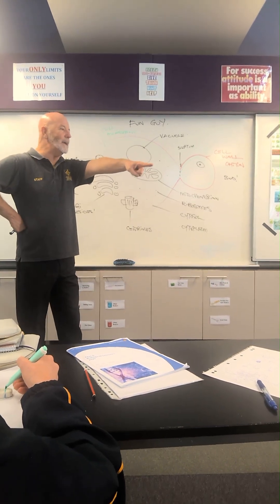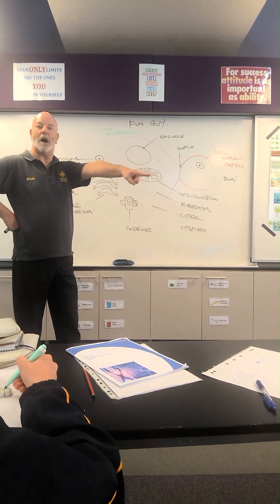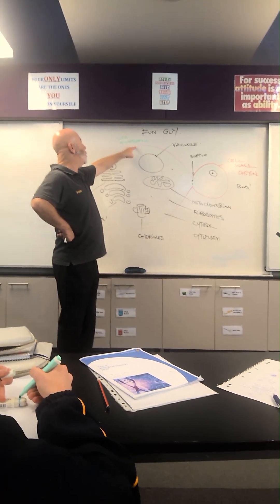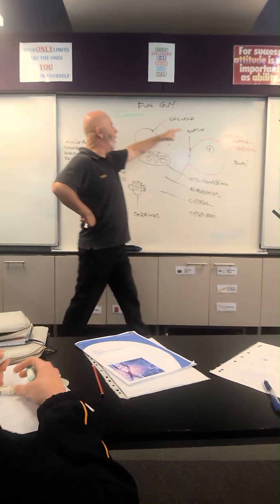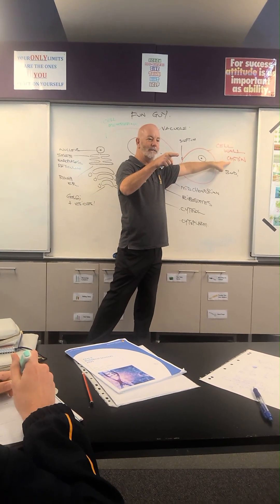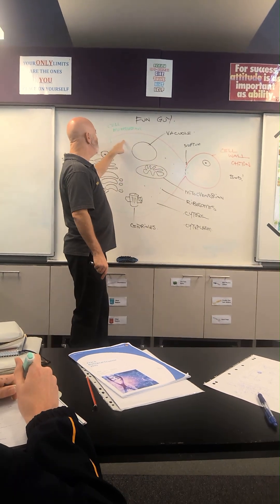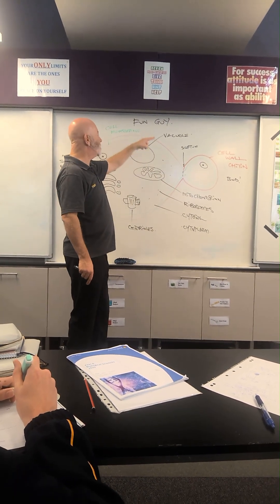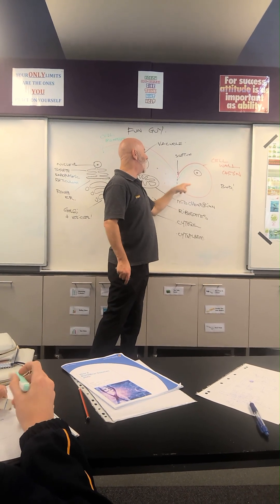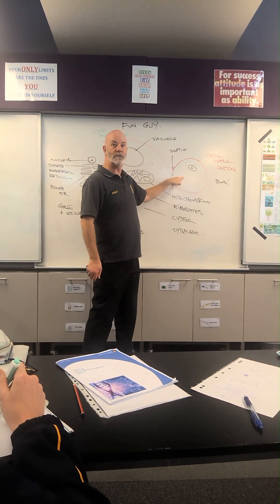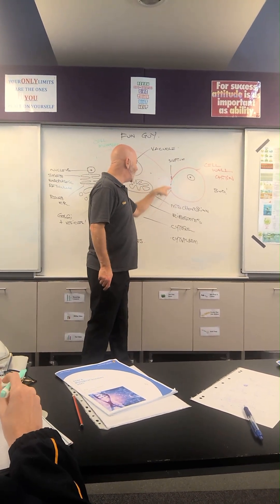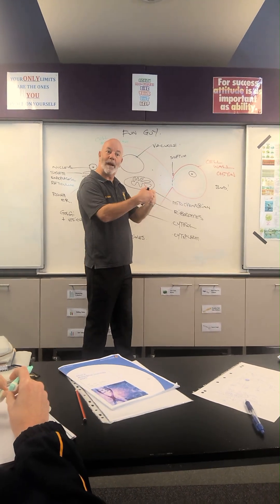Next up is the fungi. Fungi have a cell wall made of chitin — not chitin. It has a cell membrane inside the cell wall. Over here we have a bud, which is how the fungi reproduces. In the middle there we've got a septum, which is how it's going to break.